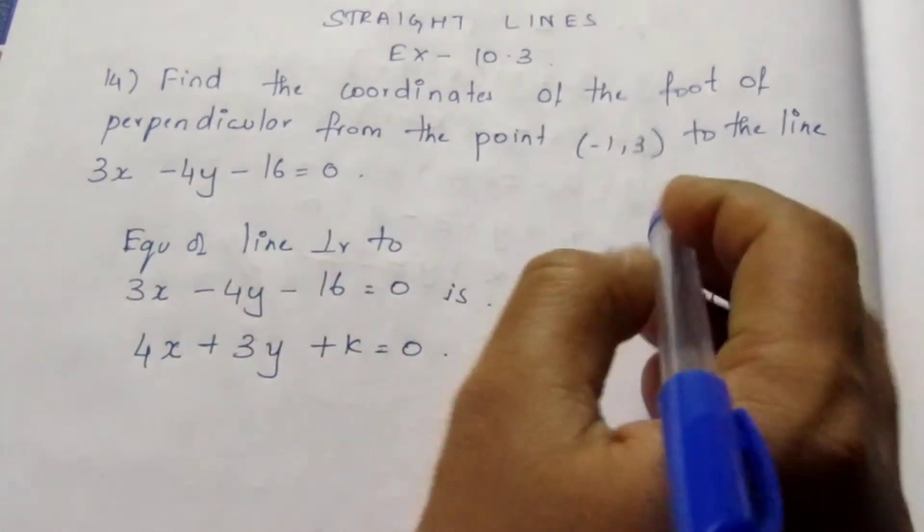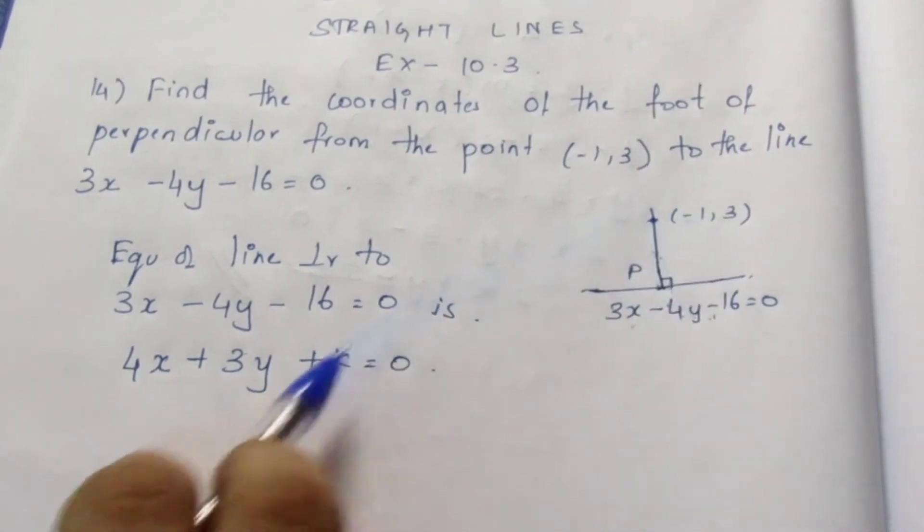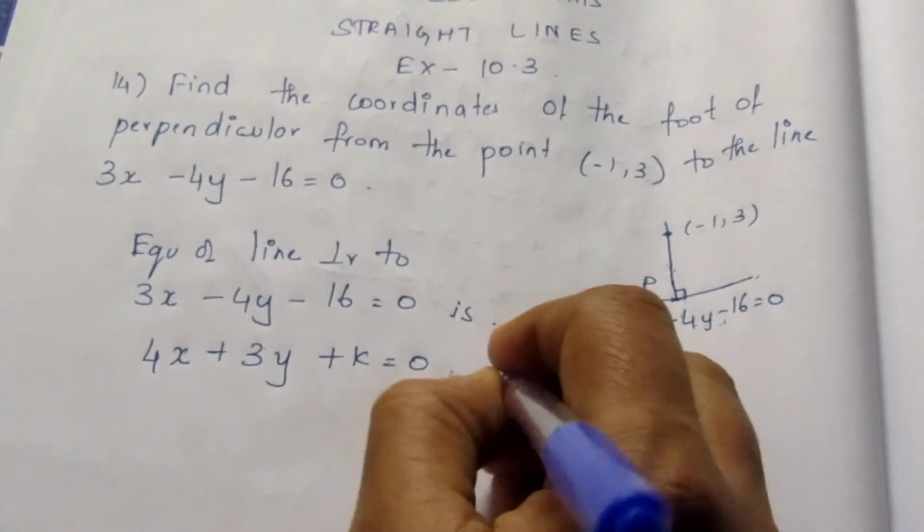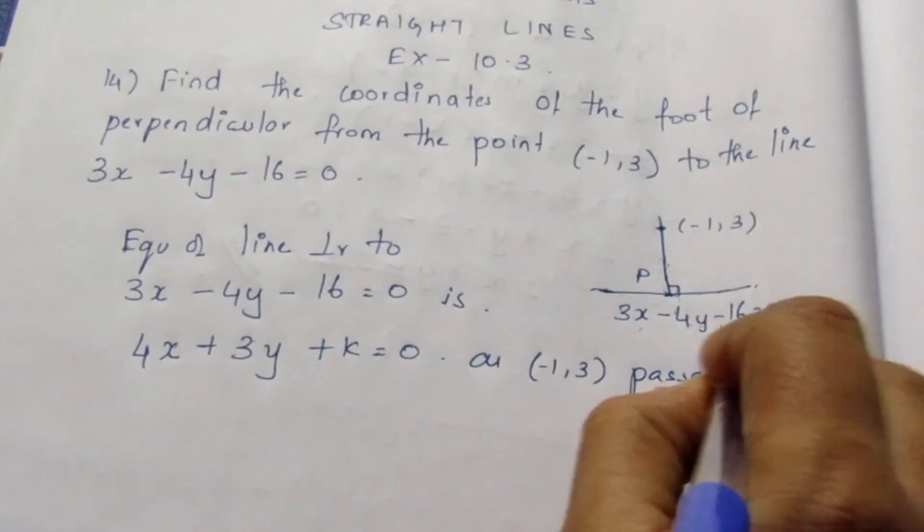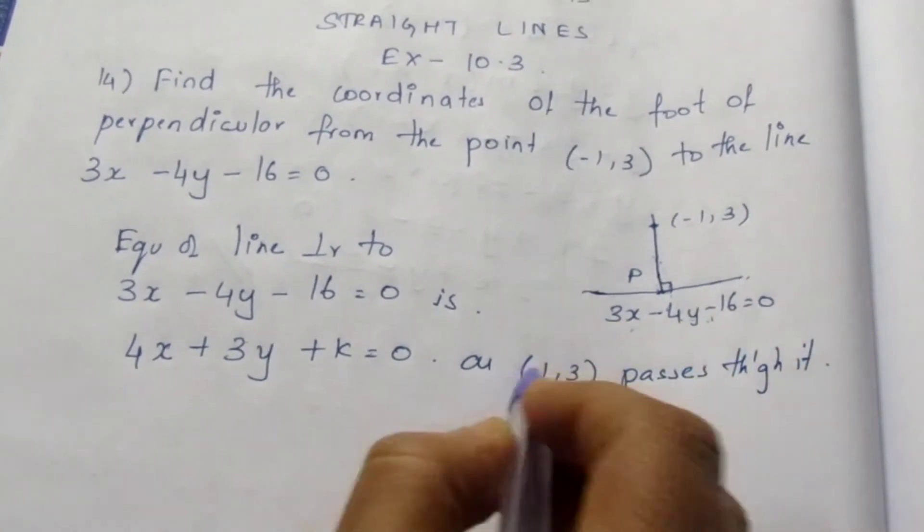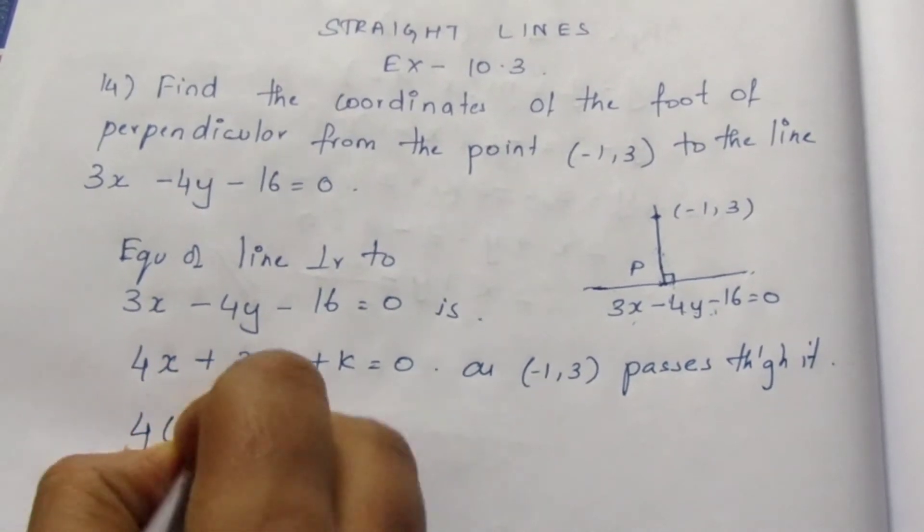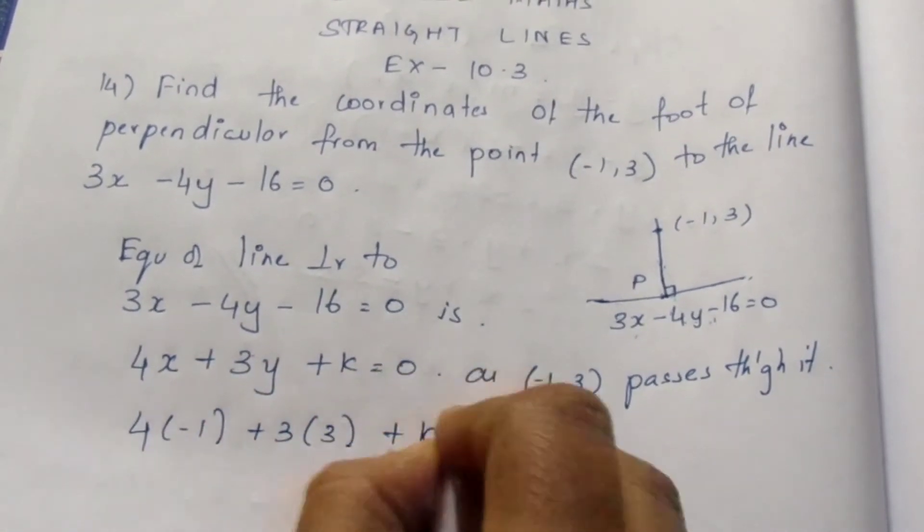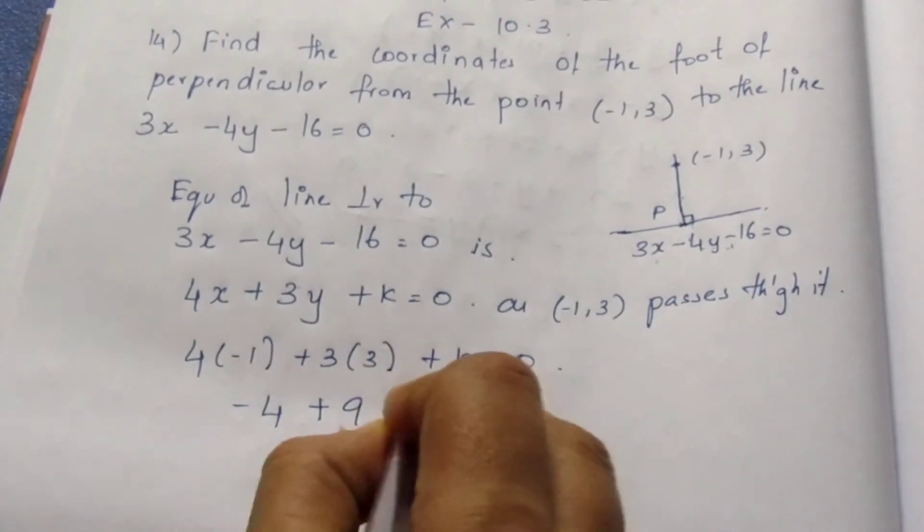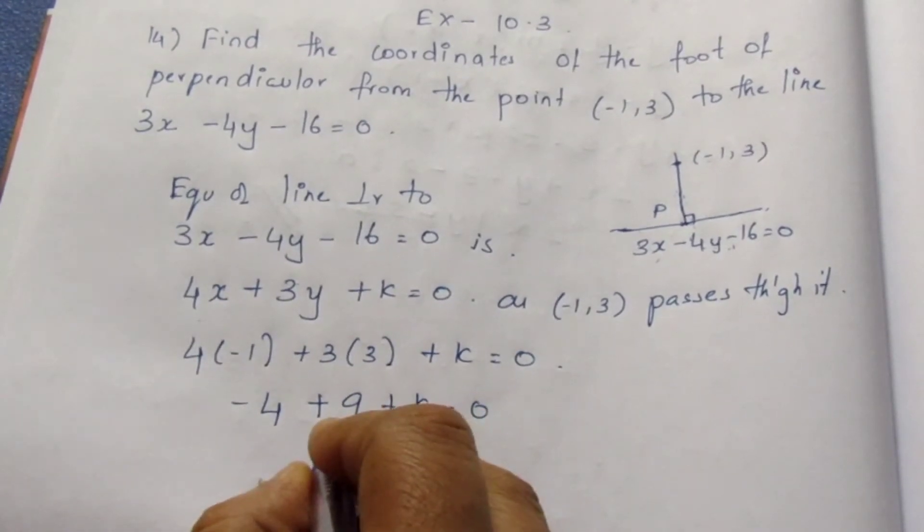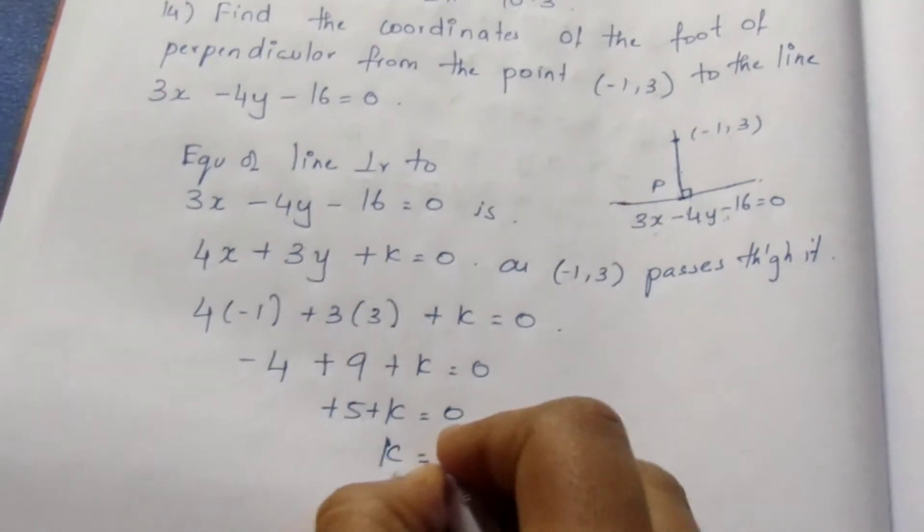We know that this is the equation of the perpendicular line and we know the point (-1,3) passes through this. As (-1,3) passes through it, we can directly substitute the point instead of x and y to find k. Now this becomes 4(-1) + 3(3) + k = 0. Now this becomes -4 + 9 + k = 0. So k, here it becomes plus 5. If this comes to this side, k = -5.